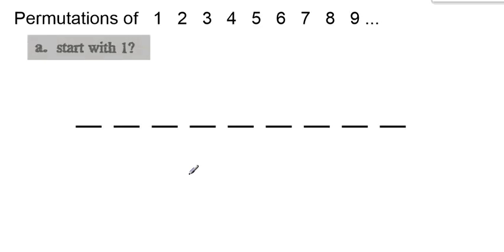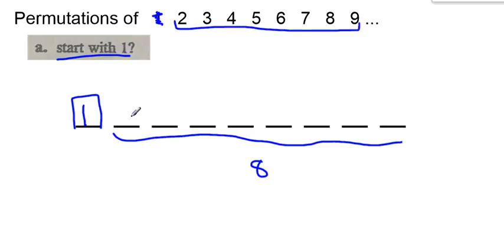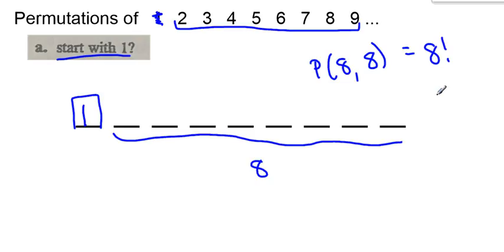So let's look at the first actual question that was asked of us. It says how many permutations of these numbers start with the number one? So what I'm going to do is put the number one in the first position and take it away from my set. This is not a choice — I was told to start with the number one. So I really now have eight spaces left to fill with eight unique objects. To fill these eight spaces, it's a permutation of eight objects into eight positions, which is simply 8 factorial — 40,320.